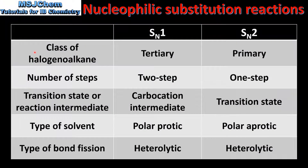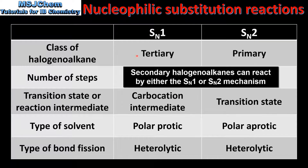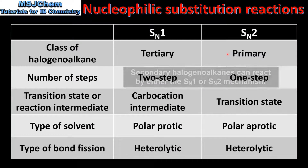We'll start by looking at the class of halogeno alkane. Tertiary halogeno alkanes react via the SN1 mechanism. Primary halogeno alkanes react via the SN2 mechanism.